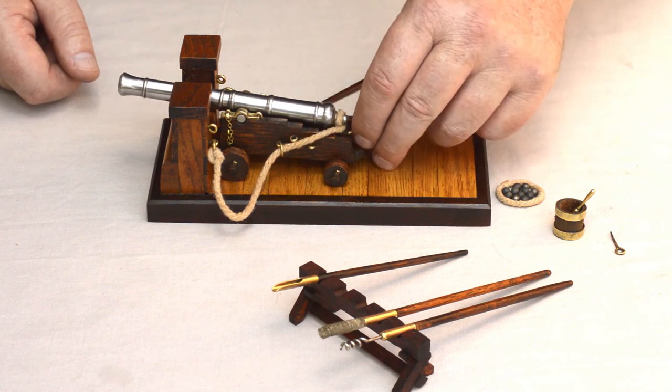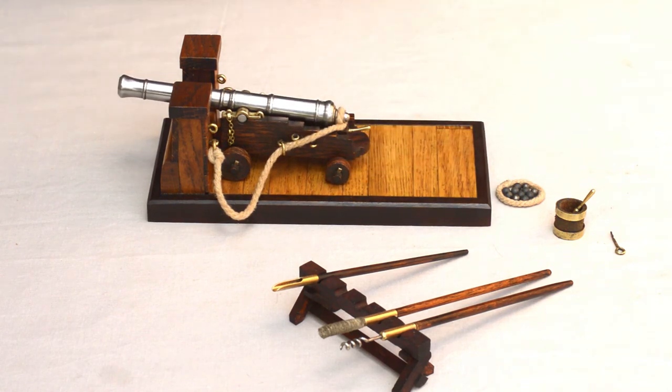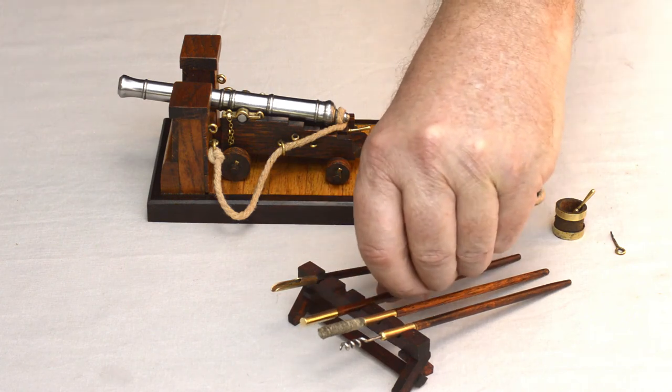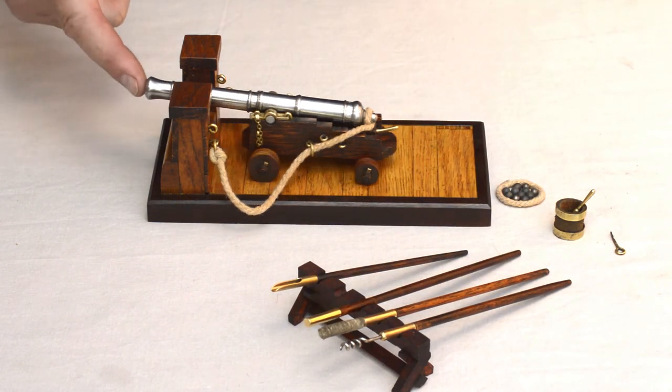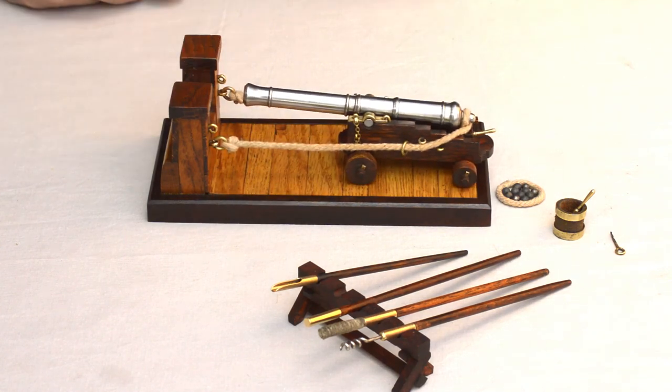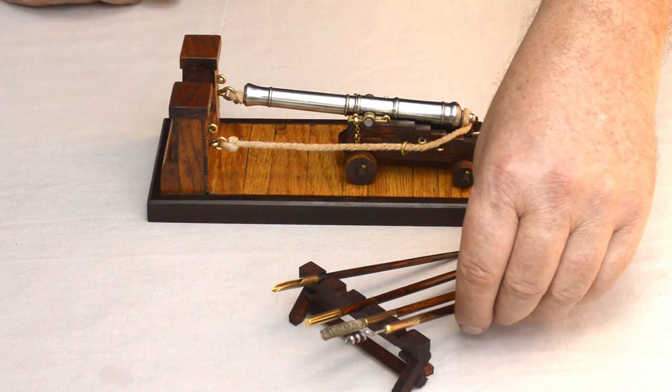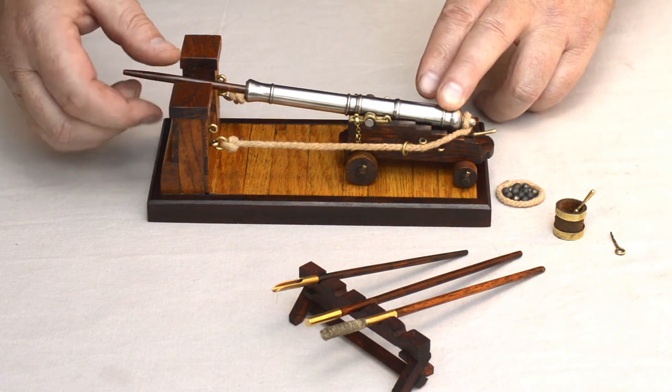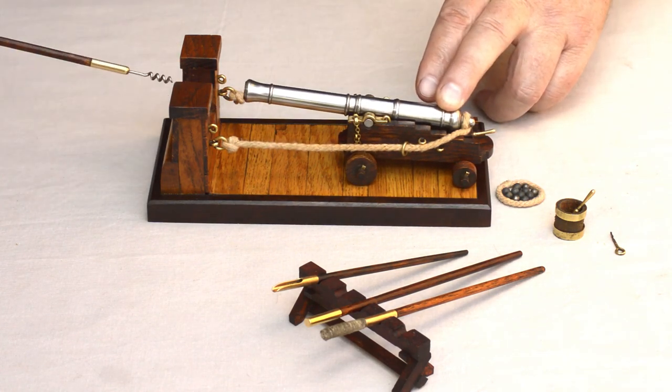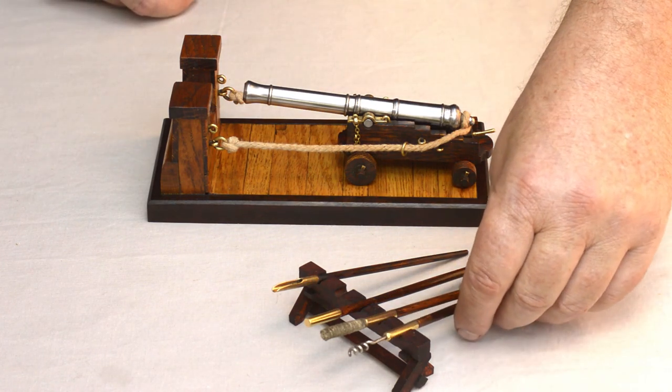The gun is now fully ready to fire, and the gun captain would discharge the piece with his flintlock mechanism. Once the gun is discharged, the whole process will start over again. The gun will be wormed and then sponged, and the whole procedure would follow as before.